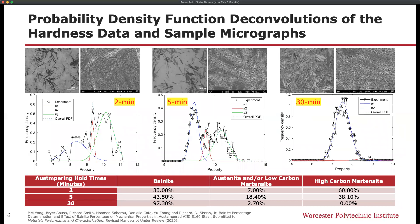Using the aforementioned data associated with the nanomechanical maps, we can see through probability density function deconvolution of the hardness data that the 2-minute, 5-minute, and 30-minute results agree with the XRD-derived trends. We see that bainite increases from 33% to 43.5% and ultimately 97.3%, while the martensite decreases, and the austenite and/or low-carbon martensite — given their similar hardnesses — show an overall decreasing trend as well.